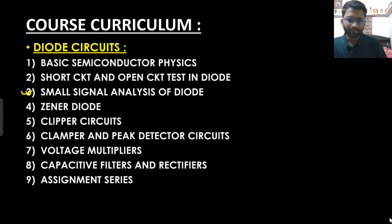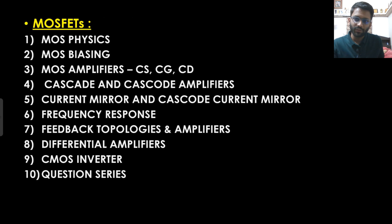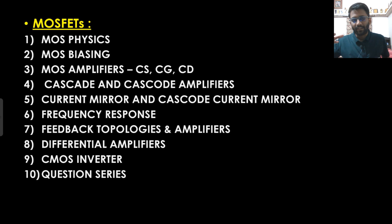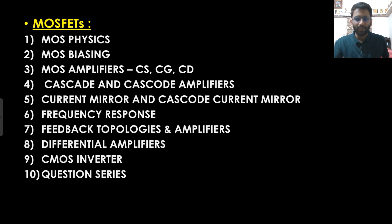In diode circuits I have designed three assignments. After that, normally BJT is covered, but we are going to cover the four-terminal device — MOSFET — first. We will study MOSFET, then biasing: why do we bias the MOSFET and what is the advantage of biasing. Then we will move to amplifiers, and how we move from biasing to amplifiers.